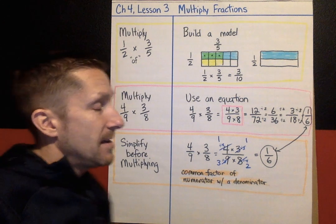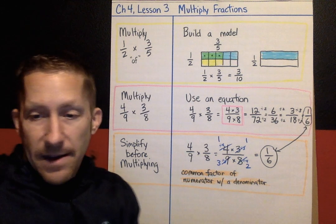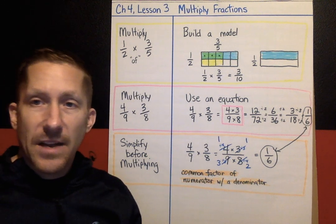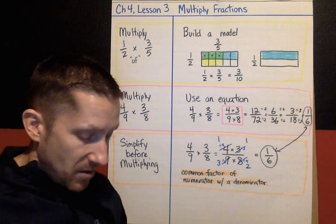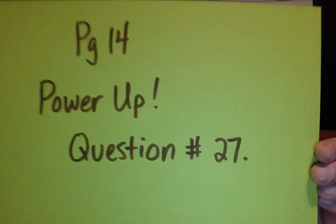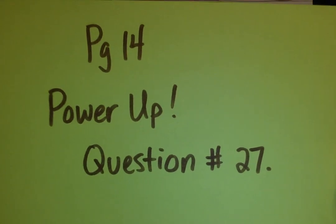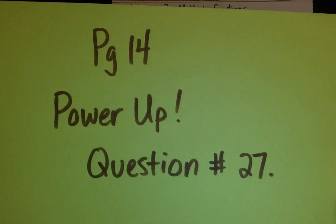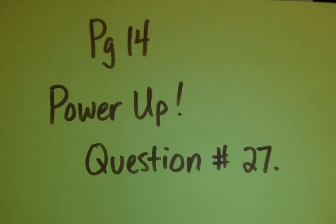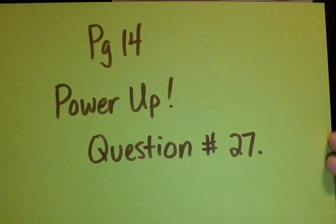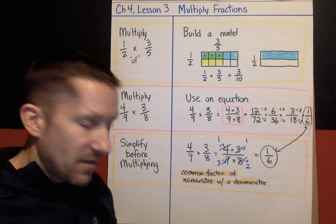That does it for Chapter 4, Lesson 3. Your hidden treasure for today is a problem back in your workbook. If you look on page 14, you'll see power-up questions. Question number 27 — power-up question number 27 — solving and being able to explain it is your hidden treasure for this lesson.